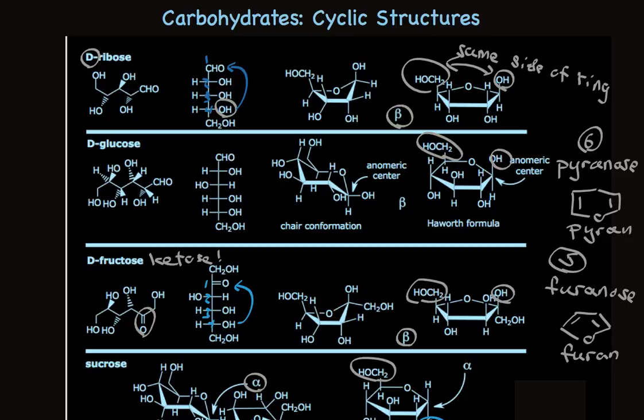So there you have it, an overview of some important cyclic carbohydrates, and how they're formed from the aldehyde forms. In another lecture, I'm going to talk about how the names of carbohydrates tell you how many carbons there are, the ring size, and all the details about the stereochemistry.